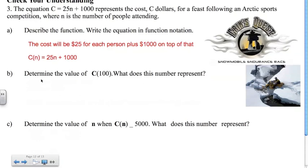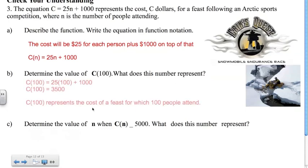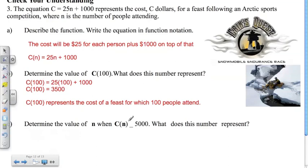For part B, determine the value of C(100) and what does this number represent? This represents the cost if 100 people attend. When we do the math, C(100) equals 25 times 100 plus 1,000, which gives us $3,500. For part C, determine the value of N when C(N) is equal to 5,000.